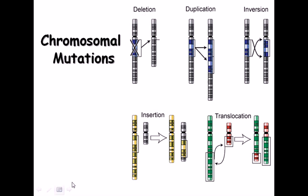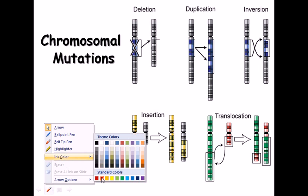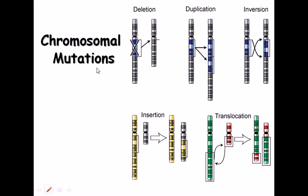Deletion, as the name suggests, means the deletion of a segment of a chromosome. These mutations occur at the macro level and can be caused by various kinds of radiation and other changes. So deletion means the deletion of a stretch of chromosomal sequence.